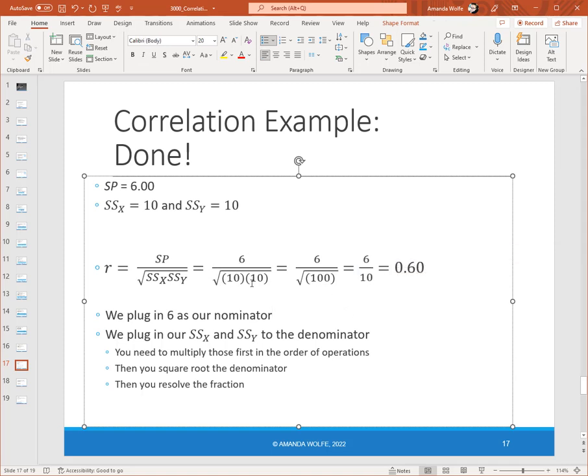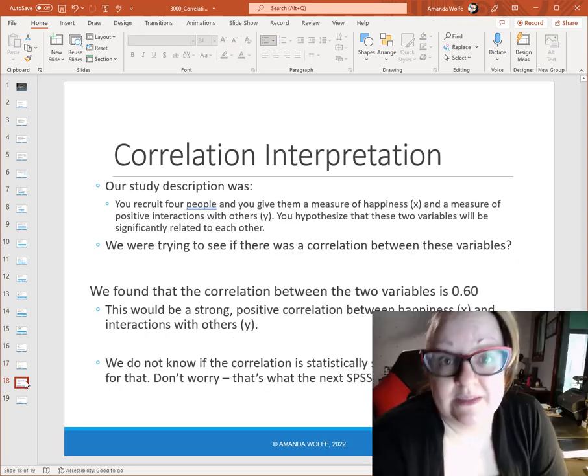Of course, if your two numbers are the same, then you know that the square root would be that same number. But in the future when those numbers are different, remember you need to multiply these things together before you take the square root for order of operations. So we have six divided by ten, which gives us .60 as our final correlation value. So what does this mean?